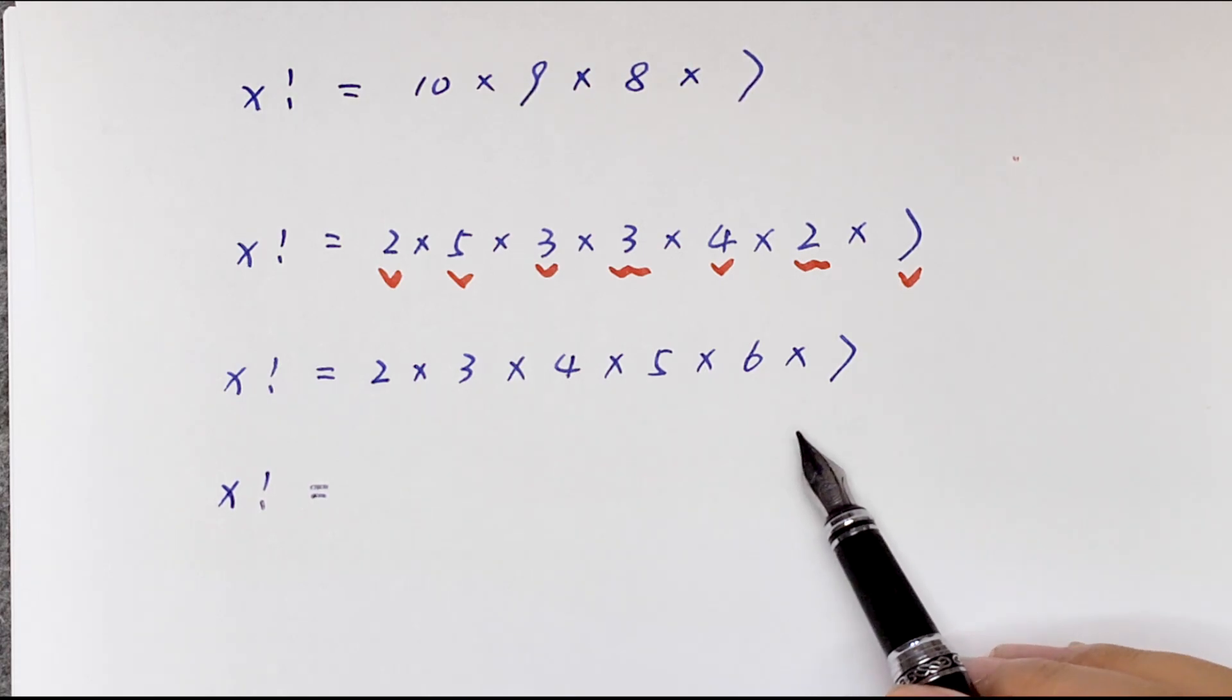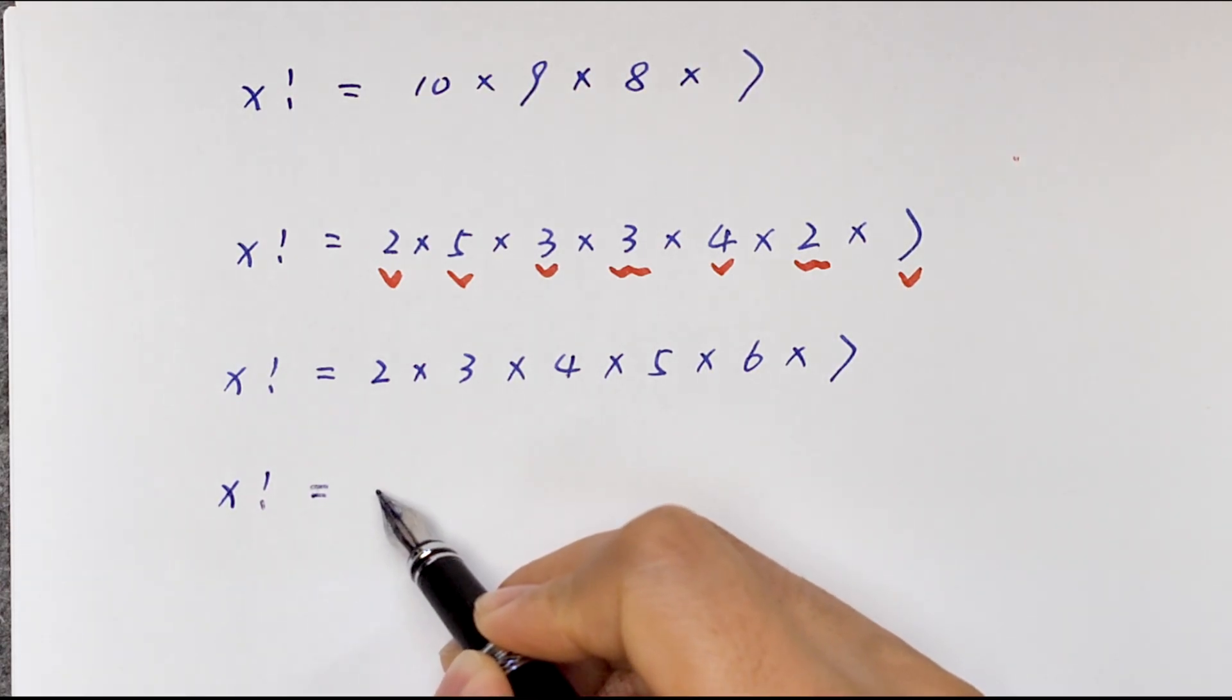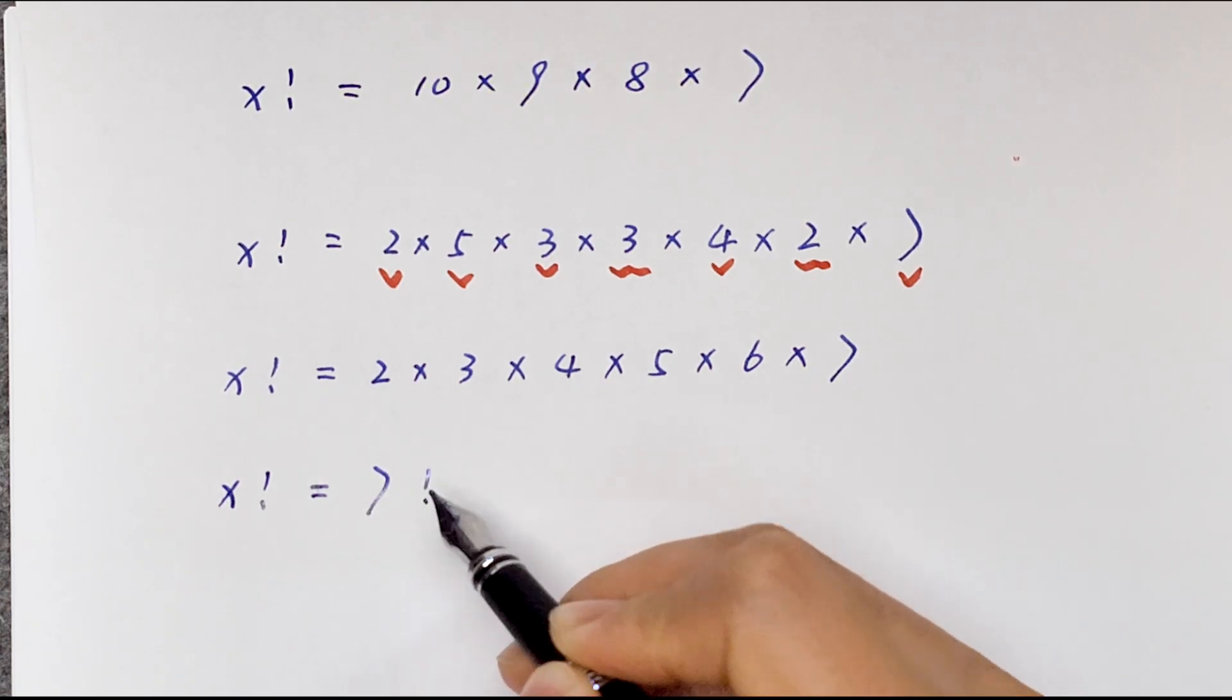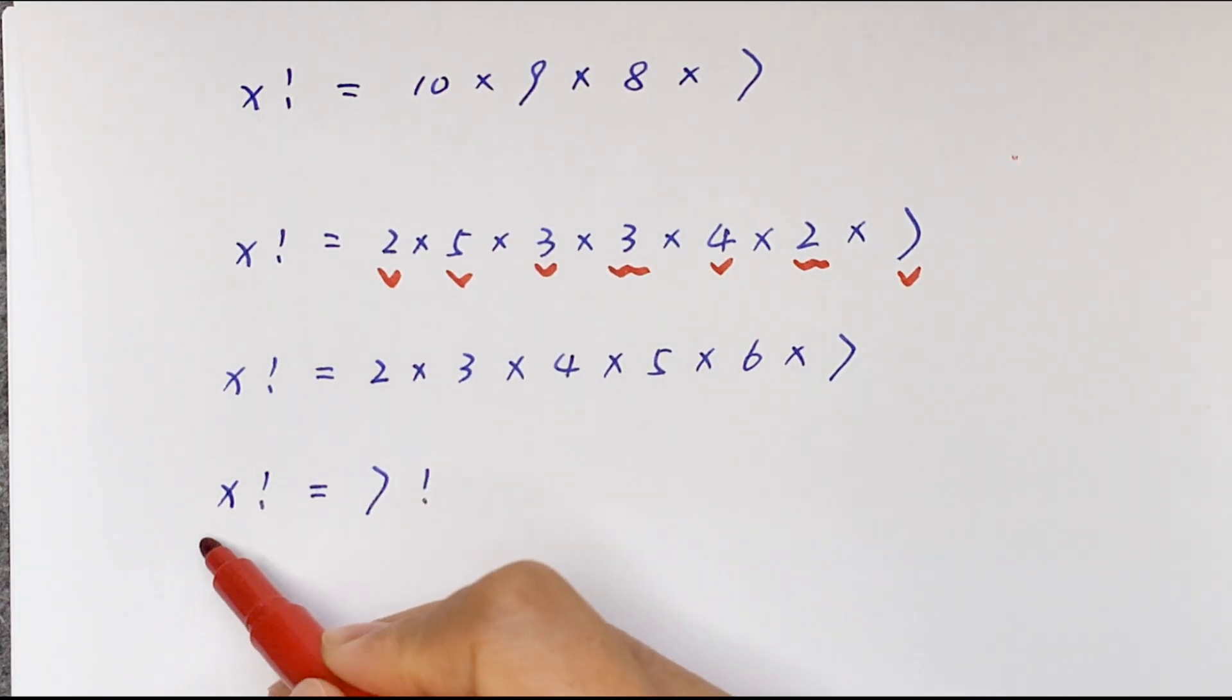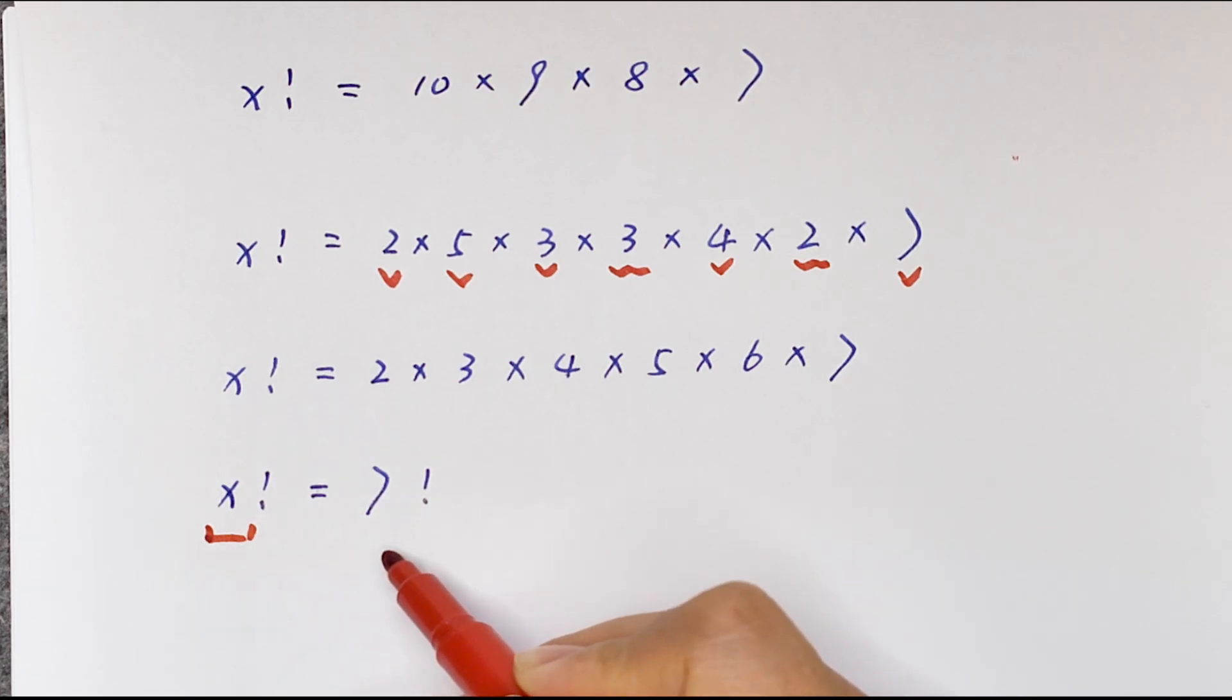This is equal to 7 factorial. So we compare x factorial is equal to 7 factorial.